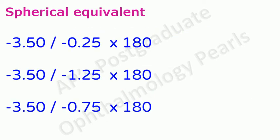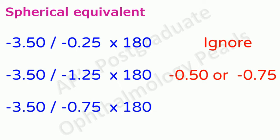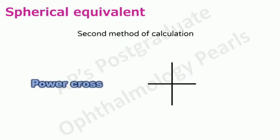Sometimes the cylinder may not be divisible into a power that is usually available. In that case the nearest available correction that is acceptable for the patient is used. For example if the cylinder is 0.25 it can be ignored. If it is 1.25 you may use either 0.5 or 0.75 and if it is 0.75 either 0.25 or 0.5 may be used to add to the sphere for calculation of the spherical equivalent.